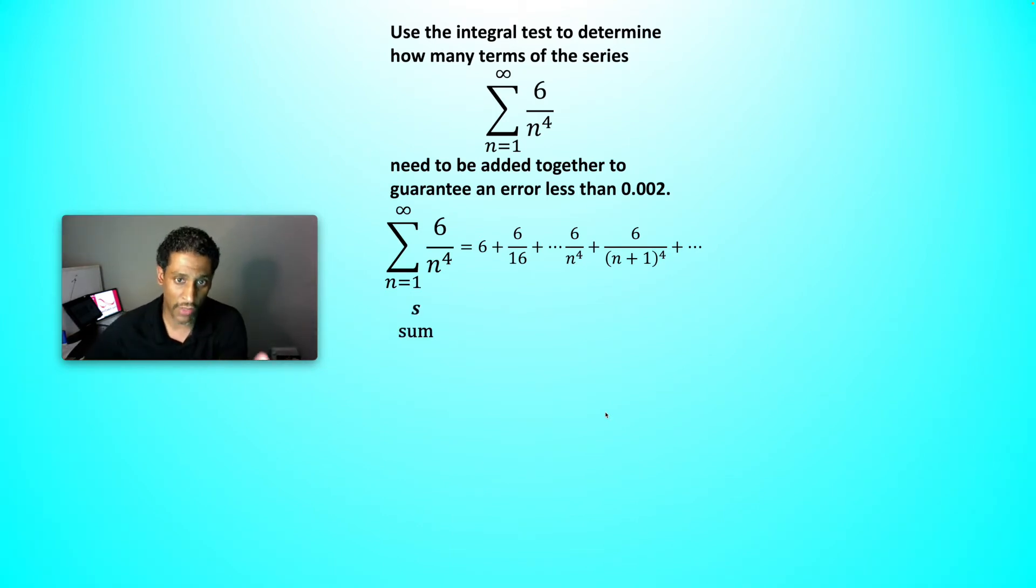The true sum on the left-hand side we use a lowercase s for. And then what we do is we approximate, we get what's called a partial sum. We stop after n terms and we add that much up. That's your approximation. But with that, there's remainder. And the question then becomes, how do you get a control on the remainder?